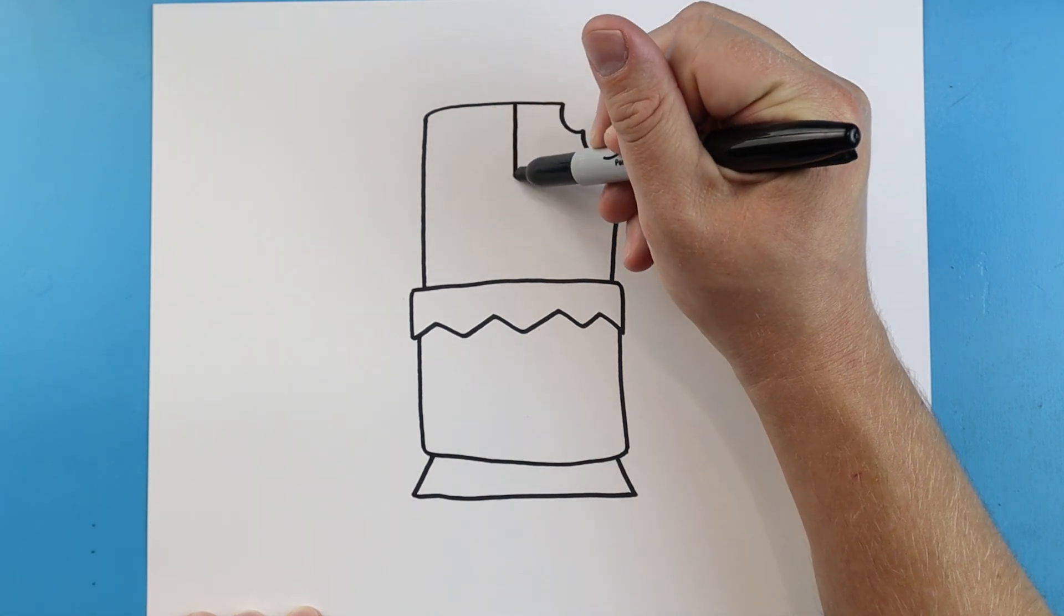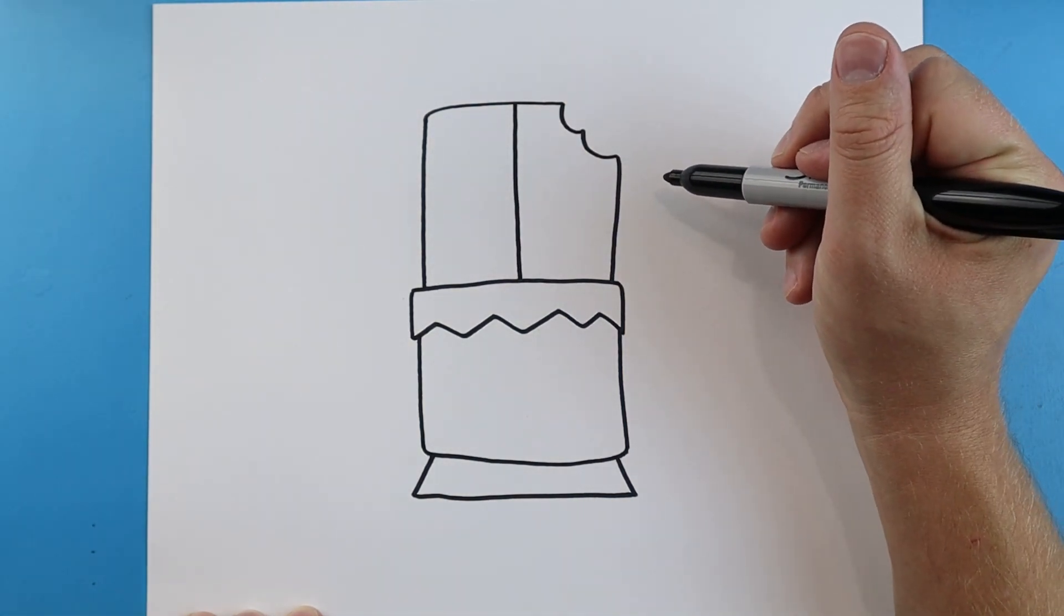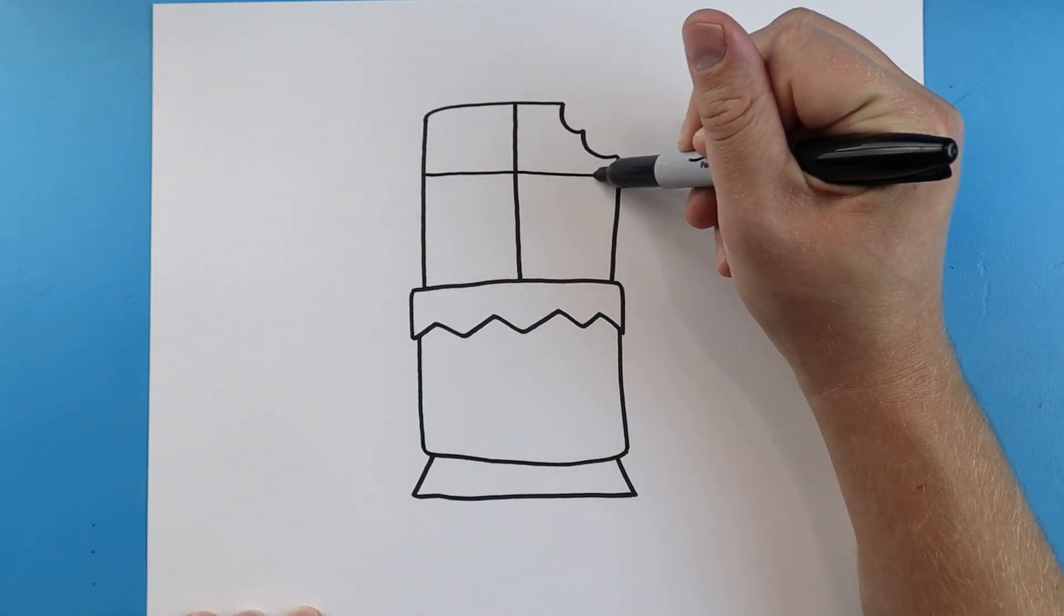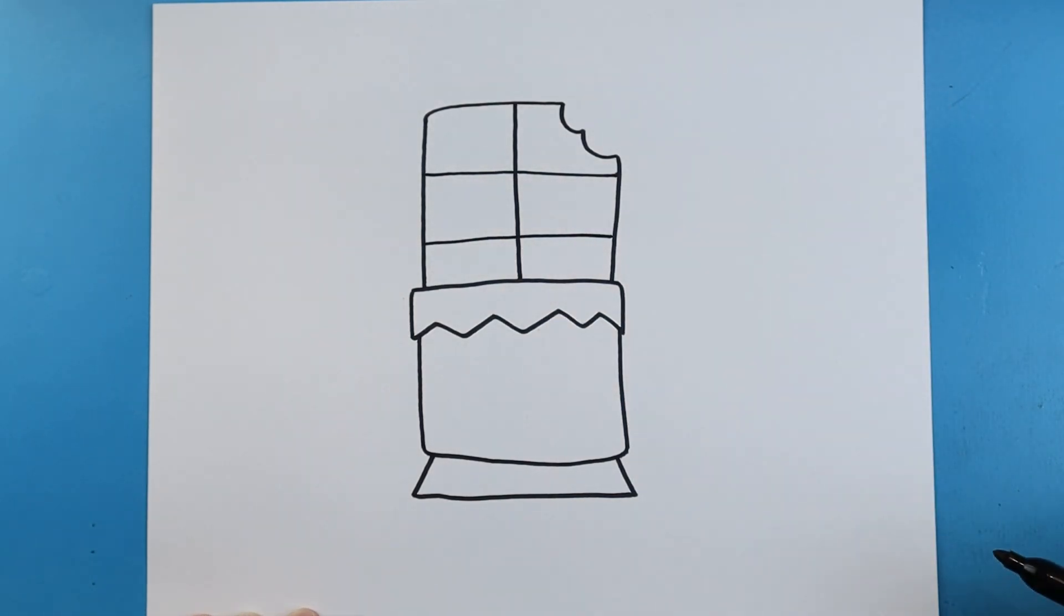Now starting here I'm going to draw a line that comes down. Next starting here we'll draw two lines that come across for different little sections of the candy bar.